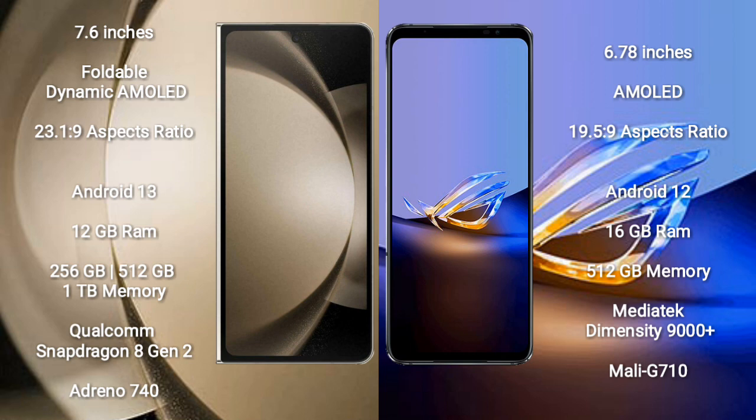The Samsung Galaxy Z Fold 5 runs on the Android 13 operating system. The Asus ROG Phone 6D Ultimate runs on the Android 12 operating system. The Samsung Galaxy Z Fold 5 comes with 12GB RAM and 256GB or 512GB or 1TB internal storage.